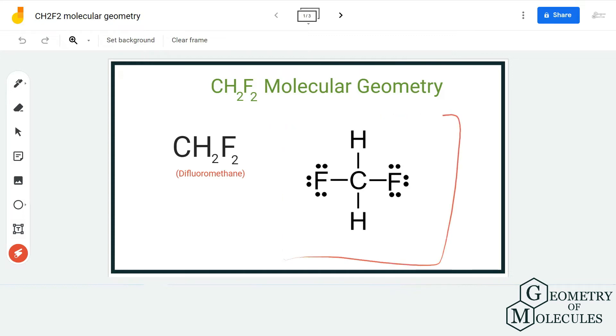So this is the Lewis structure of this molecule in which the carbon atom is in the center and it is forming bonds with four atoms, out of which two are fluorine atoms and the rest two are hydrogen atoms.